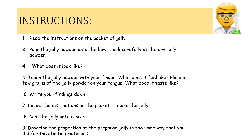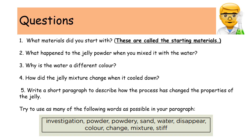Cool the jelly until it sets, then describe the properties of the prepared jelly. Questions: number one — what materials did you start with? These are called the starting materials. Number two — what happened to the jelly powder when you mixed it with the water? Number three — why is the water a different color? Number four — how did the jelly mixture change when it cooled down? Write a short paragraph to describe how the process changed the properties of the jelly, using as many of the key words as possible.